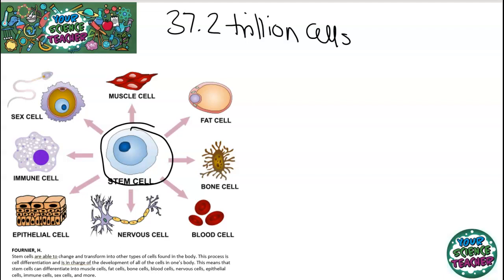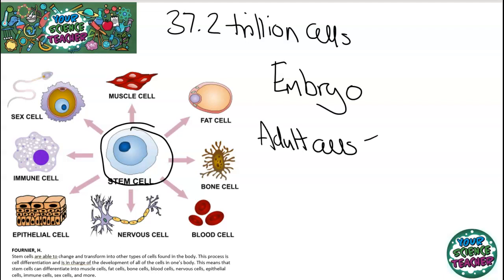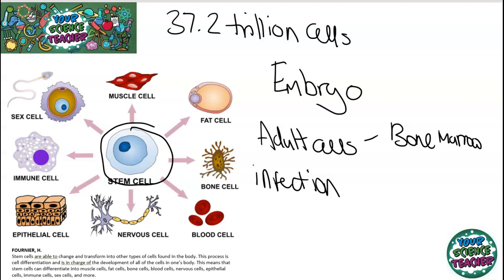At what stage in humans and animals does this differentiation take place? A lot of this differentiation takes place when you are an embryo — when you're just a collection of cells, your cells will start differentiating. You can see that babies start to develop features at different rates as different cells are being made. However, there are also adult stem cells found in places like bone marrow, which are reserved for when you get an infection or damaged cells, so your body can reproduce cells to become specialised.